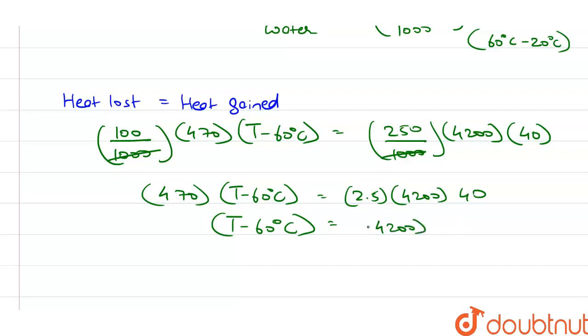4200 into 100, 2.5 into 40 is 100, so divided by 470.